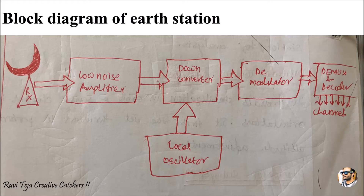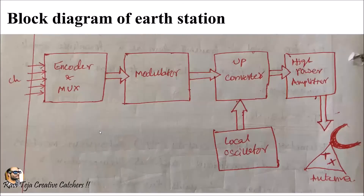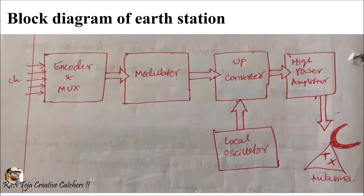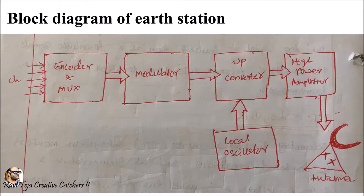Now in order to explain the block diagram, we have two sections: the transmission section and the receiving section. Let's first see the transmission section — this whole unit will be in the Earth Station itself. Starting with the channels, these channels carry the data and this data is connected to an encoder or multiplexer.